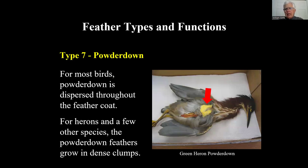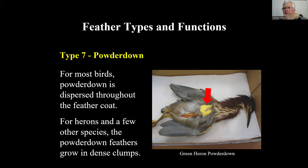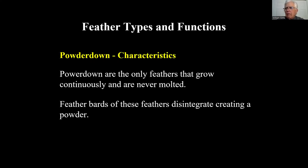Only a few species have powder down — this is unfortunately a green heron hit by a car, but nothing goes to waste. For most birds, powder down is distributed throughout the body and helps clean and remove moisture from feathers. In some birds like herons, it's concentrated in a large group at the breast. Think of talcum powder — the bird uses its beak to spread this powder through its plumage to remove contaminants. Notably, powder down feathers are the only feathers that grow continuously and are never molted. The feather barbs simply disintegrate, creating a fine powder used in feather care.